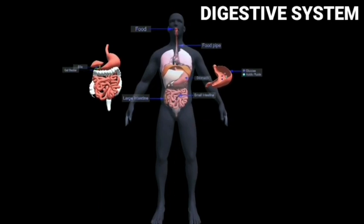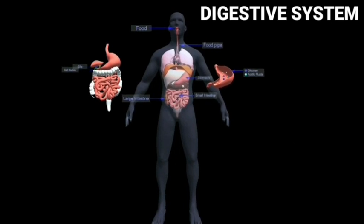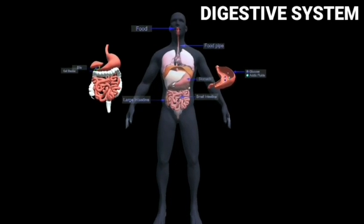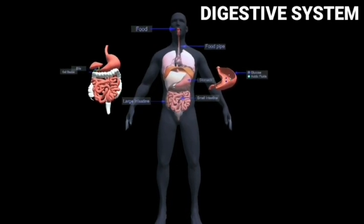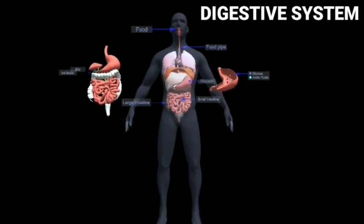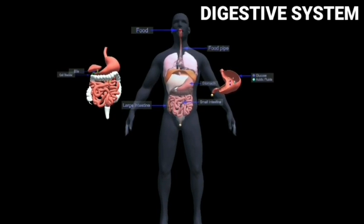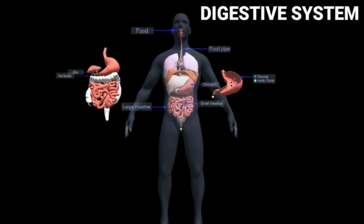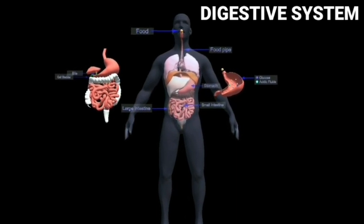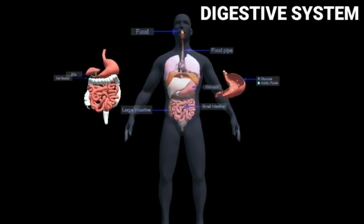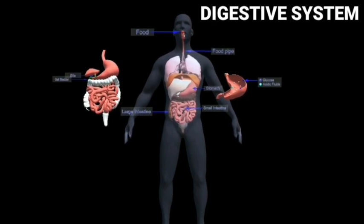Digestive system. The process of breaking down food into a simpler form so that it can be used by our body to produce energy is called digestion.